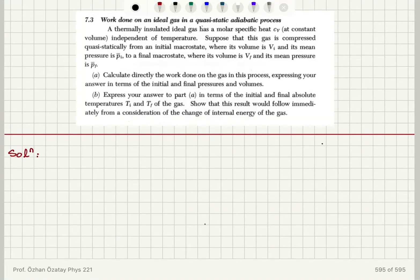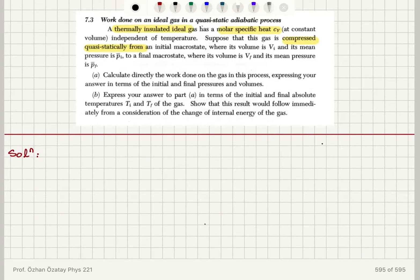Work done on an ideal gas in a quasi-static adiabatic process. A thermally insulated ideal gas has a molar specific heat cv at constant volume, independent of temperature. The gas is compressed quasi-statically from an initial state with volume v_initial and pressure p_initial to a final state with volume v_final and pressure p_final. We need to calculate the work done on the gas, expressing the answer in terms of initial and final pressures and volumes, then in terms of initial and final absolute temperatures.